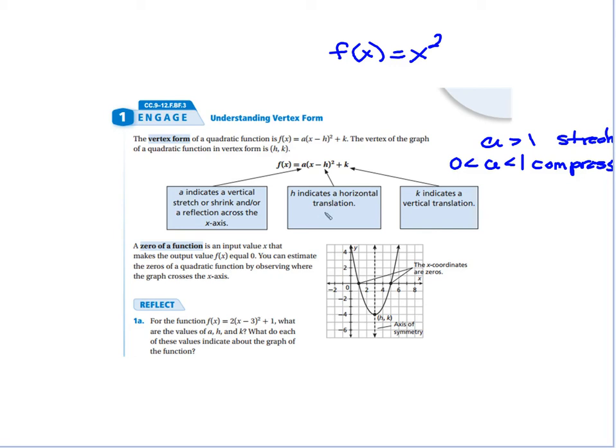Now h tells you how much it's going to translate to the left or to the right. h is always going to be opposite of the sign that's there. So if the sign in the problem is negative, it would actually translate to the right, positive one. If it was a positive one there, it would translate to the left, negative one. So it's always the opposite sign of whatever's in the h.